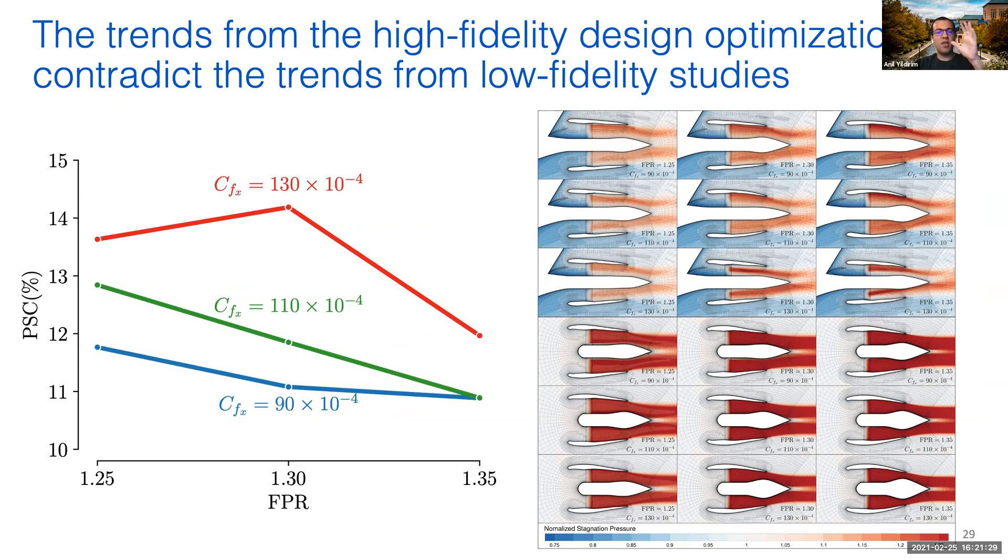This sounds like an awful lot of work to obtain three lines, but for this particular problem, several low-fidelity design studies estimated that the PSC value would increase with increasing fan pressure ratio. But in our results, we showed that the PSC values actually decrease as we increase fan pressure ratio. This is a single study, so we cannot draw strong conclusions from this. However, the discrepancies between the high and low-fidelity design studies emphasize the importance of using CFD-based design optimization.